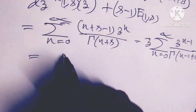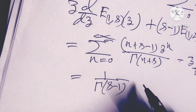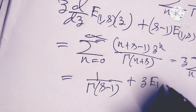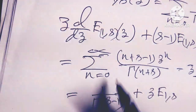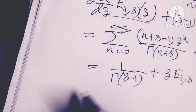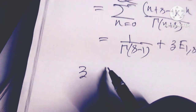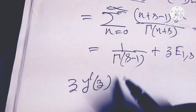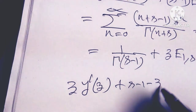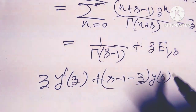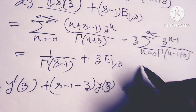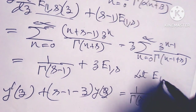After simplification, I get the value 1 over gamma(s minus 1) plus z times E_{1,s}(z). Let y equal E_{1,s}(z). Then z times y'(z) plus (s minus 1 minus z) times y(z) equals 1 over gamma(s minus 1).